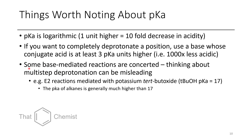For example, in an E2 reaction you might think about the pKa of an alkane versus tert-butanol. Tert-butanol has a pKa of about 17, and so you might be surprised that tert-butoxide is able to affect some elimination reactions, while the pKa of a C–H is usually in the realm of about 40, depending on what the C–H is.